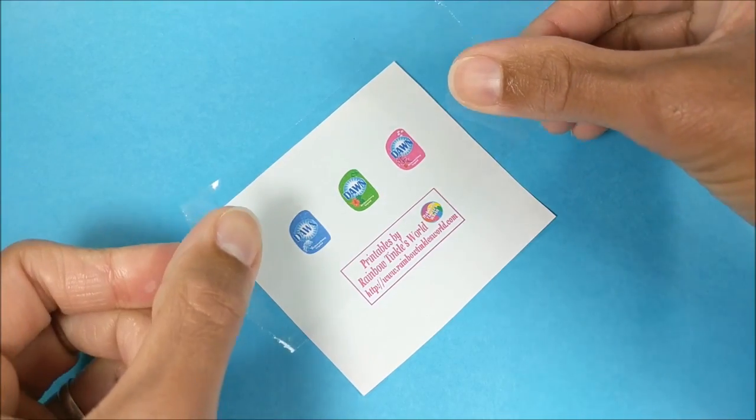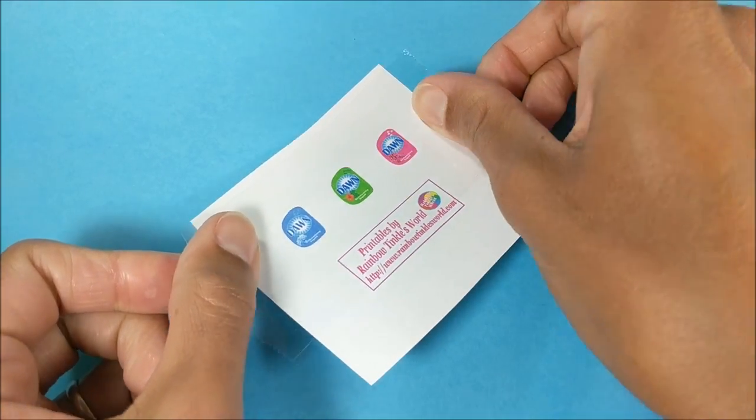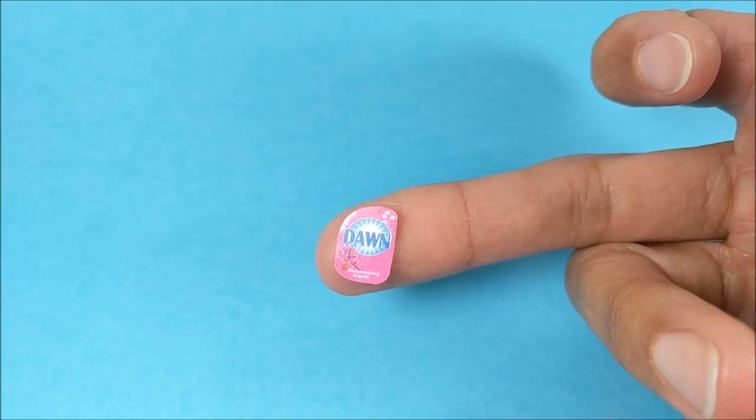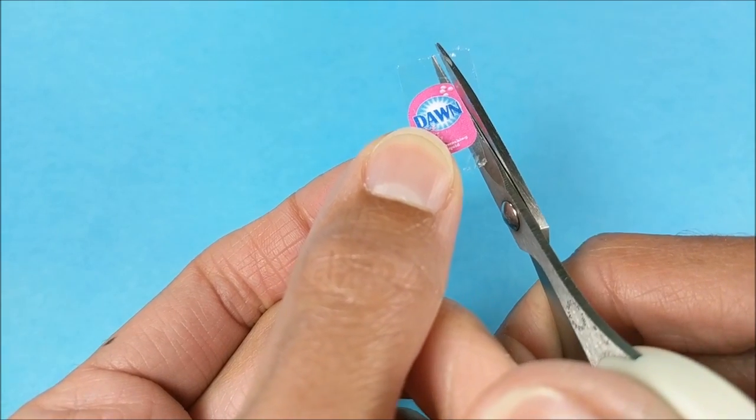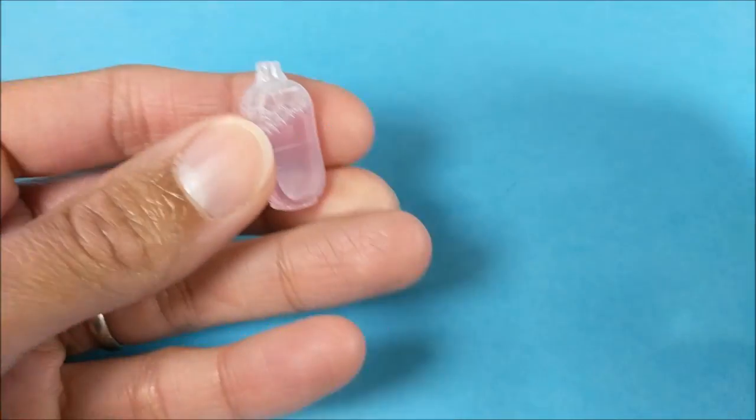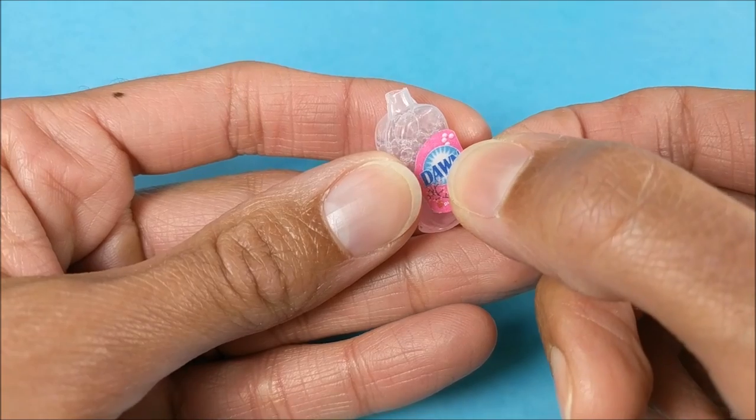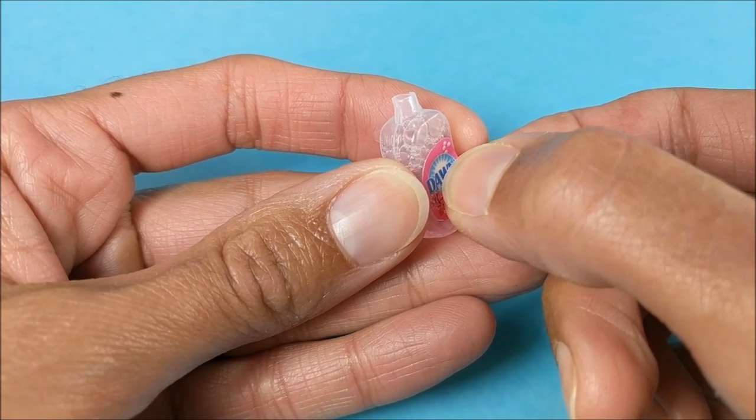I add some tape, cut it out, and then just use double-sided tape on the other side to trim and attach to my bottle. Of course you want to clean it first, otherwise it won't attach.